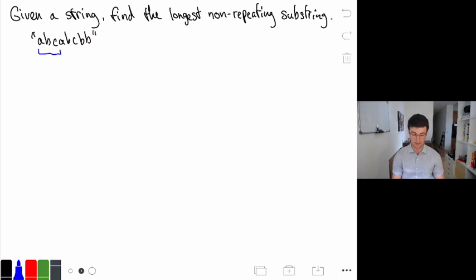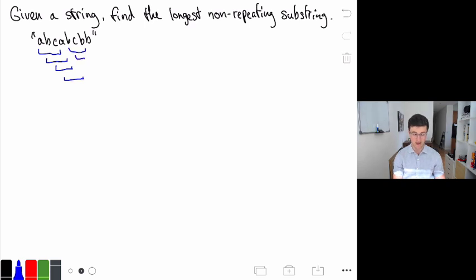That wouldn't be valid, but there are other options we could have as well. We could have b, c, a; we could have c, a, b; we could have this a, b, c here. Any of the other ones, like if we had b, c, b, that would be shorter. If we had c, b or b, c, those would also be shorter. So none of those would be the optimal solution.